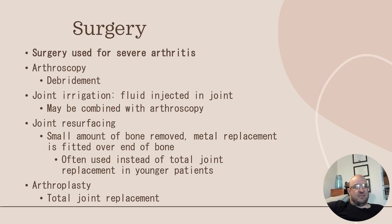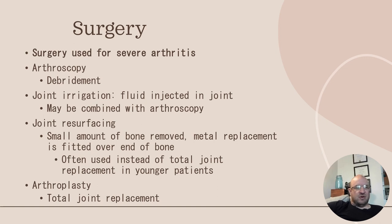Surgery is used for severe arthritis. Options include arthroscopy for debridement of material in the joints, joint irrigation where fluid is injected into the joint and may be combined with arthroscopy, joint resurfacing with small bone removal and metal replacement fitted over the end of the bone, and arthroplasty or total joint replacement.